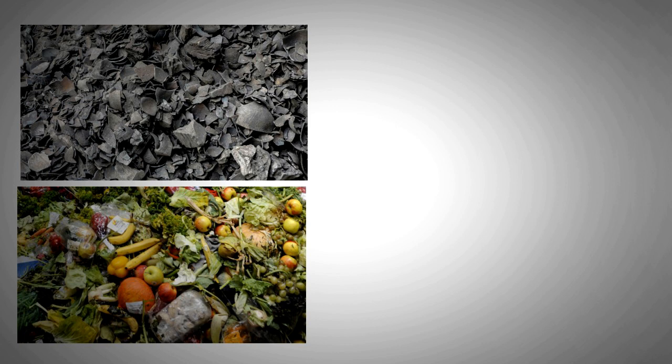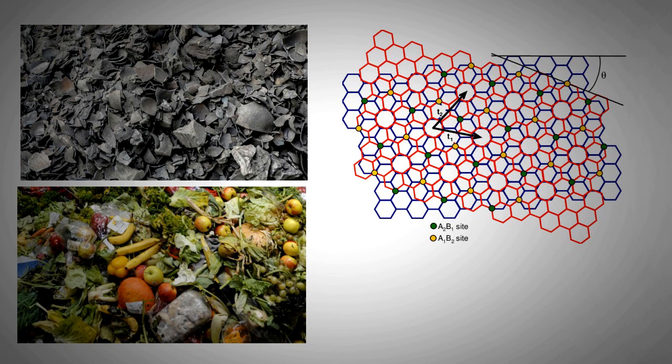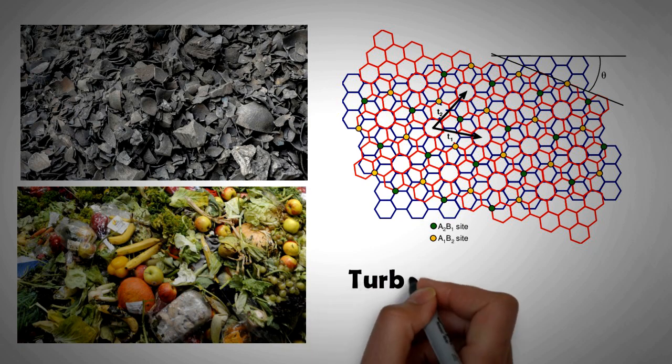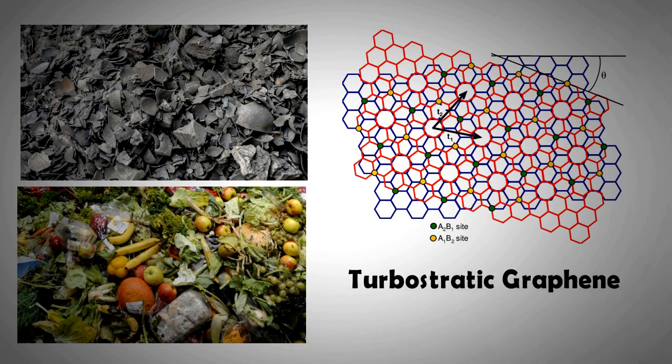Furthermore, the type of graphene produced by this method is turbostratic graphene, which is more desirable. Turbostratic graphene can be easily separated into a single layer.